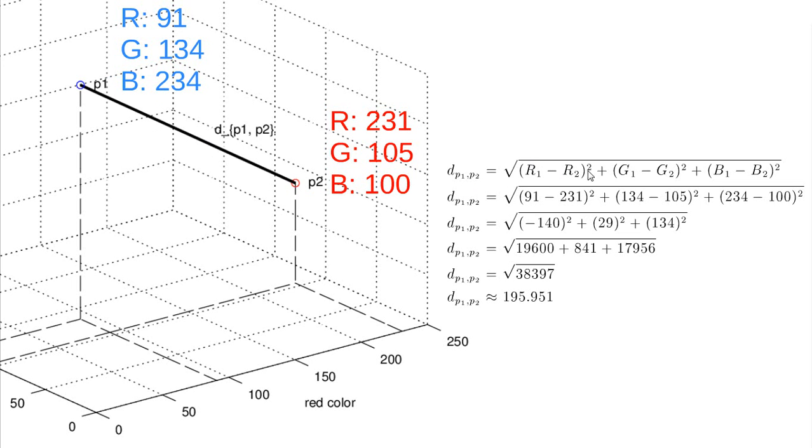So we sum all these values and here we just replace the pixel values by pixel 1 and pixel 2 values here. And in the end we solve the equation and get this value. So the Euclidean distance between these two pixels is around 195.